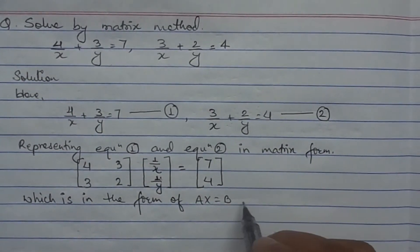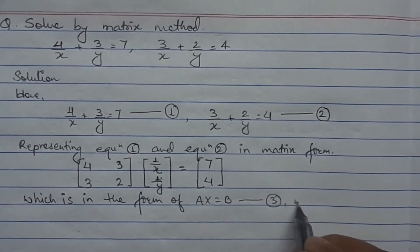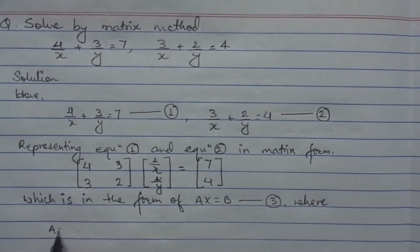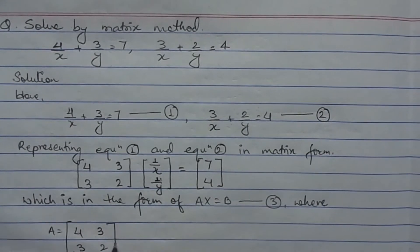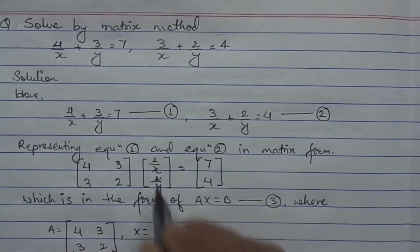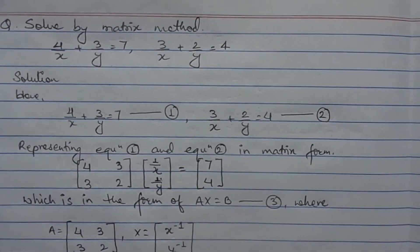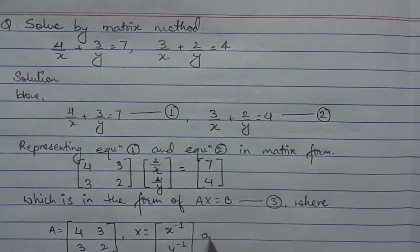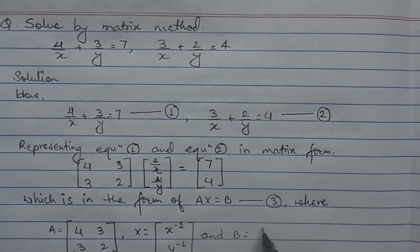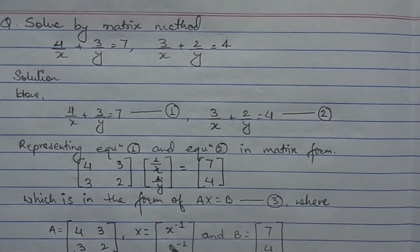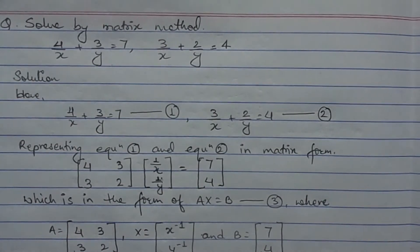This expression is in the form of AX equals B, where A is the matrix [4, 3; 3, 2], X is [1/X; 1/Y] — which can also be represented as [X to the power minus 1; Y to the power minus 1] — and B equals [7; 4], since X and Y appear as reciprocals.